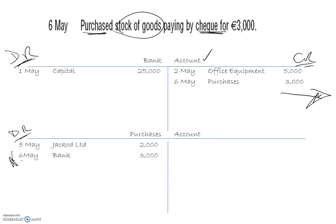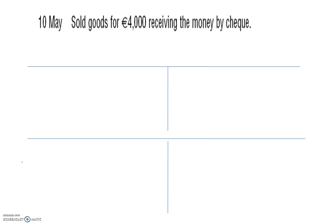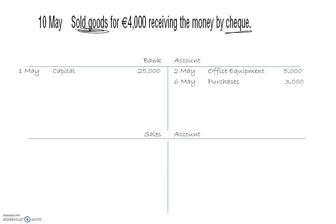10th of May: sold goods for 4,000, receiving the money by cheque. We need a sales account and the bank account. We already have a bank account with three transactions on it, so we open a new sales account. Money is coming into the bank so we debit the bank: 10th of May, sales, 4,000. In the sales account we put the entry on the credit side: 10th of May, bank, 4,000.